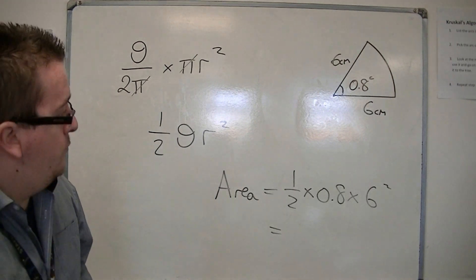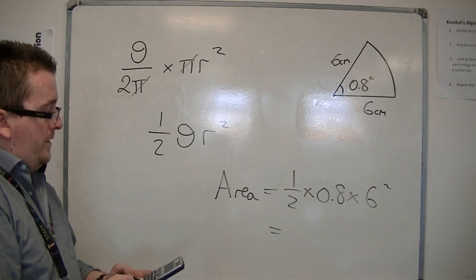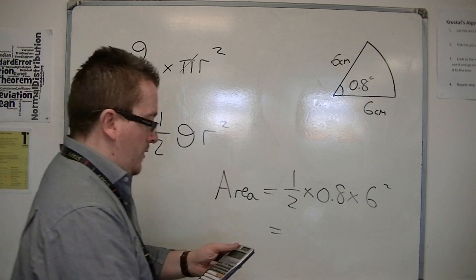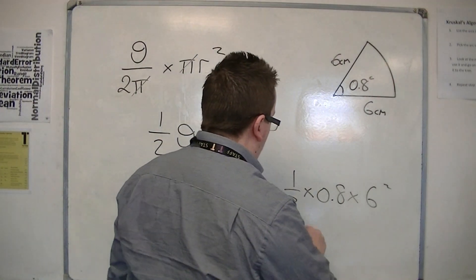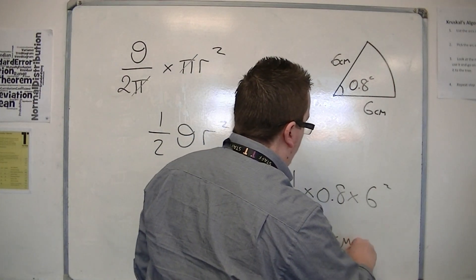So 0.5 times 0.8 times 36, which is 14.4 centimeters squared.